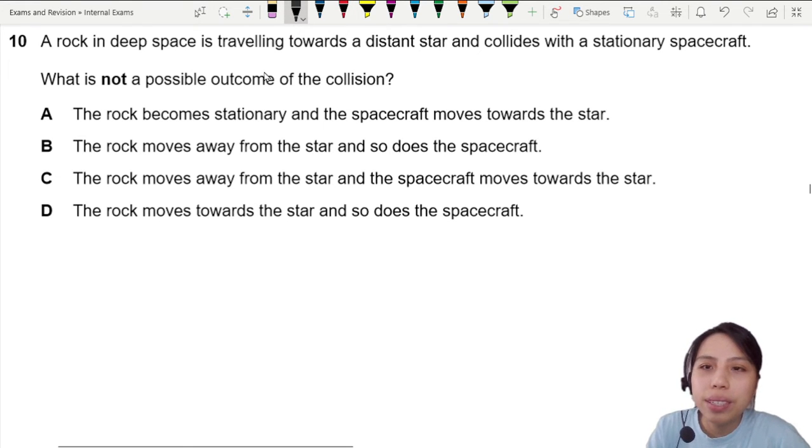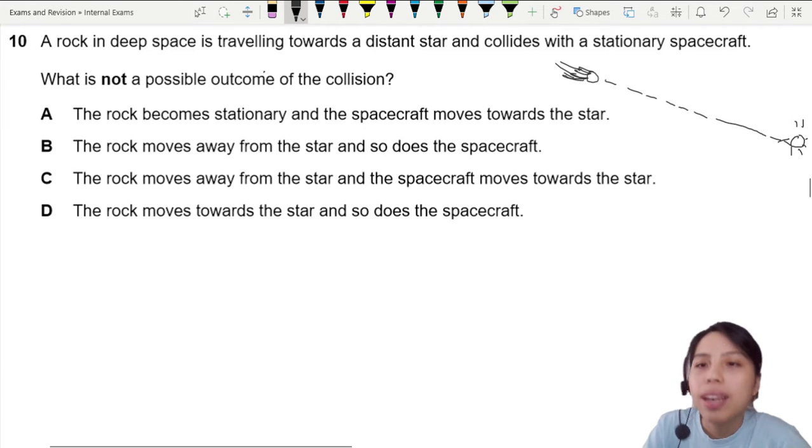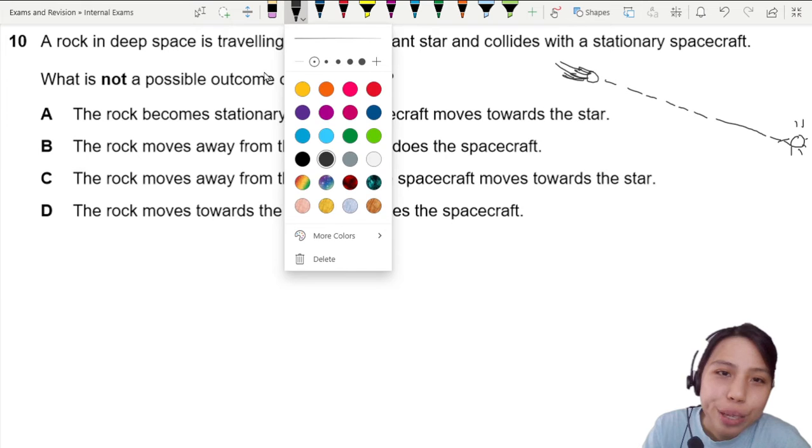Okay we have a small rock, you imagine this rock is flying towards a star which is basically another sun. It wants to go here, but halfway there is this spacecraft in the way.